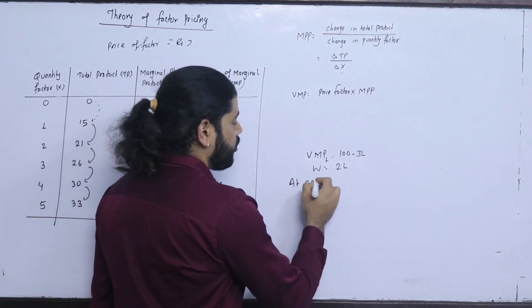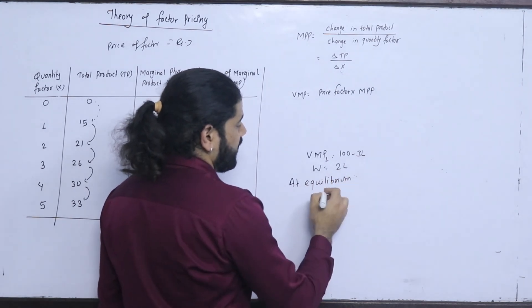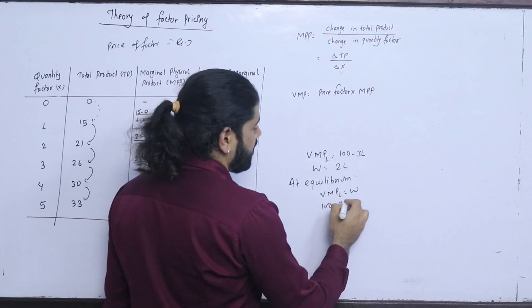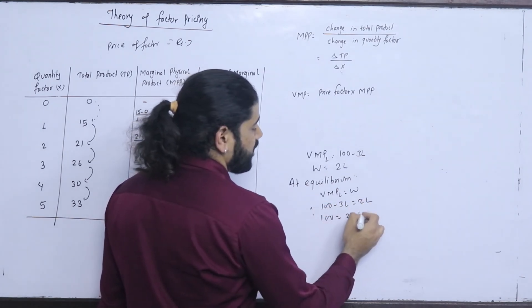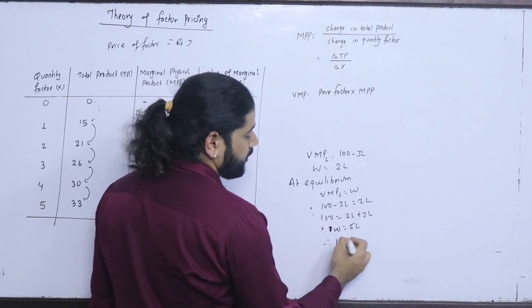Equilibrium. This is the value of numerical theory. In numerical theory, VmPL equals to W. 100 minus 3L equals to 2L. 100 equals to 2L plus 3L. 100 equals to 5L. Therefore, L equals to 20.